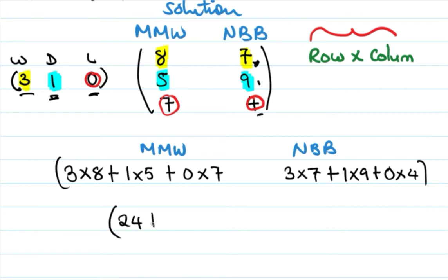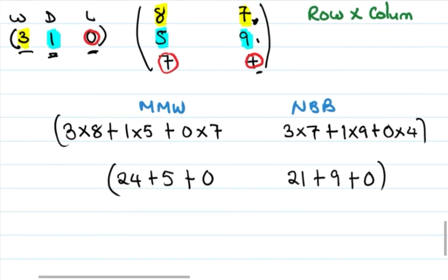For MMW: 3 times 8 is 24, plus 5, plus 0 equals 29 points. For NBB: 3 times 7 is 21, plus 9, plus 0 equals 30 points. NBB has 30 points and MMW has 29 points.